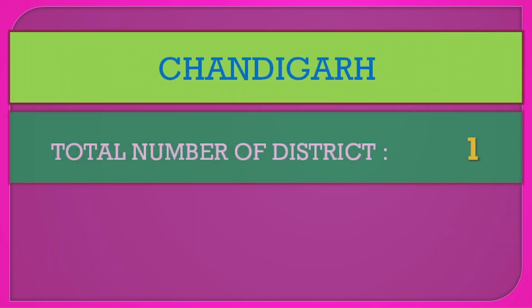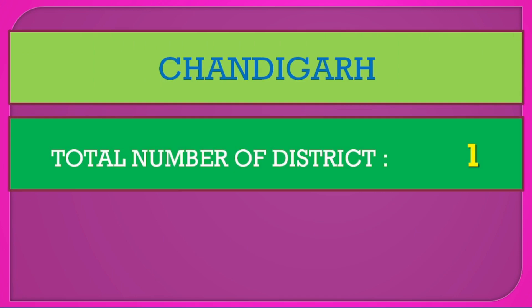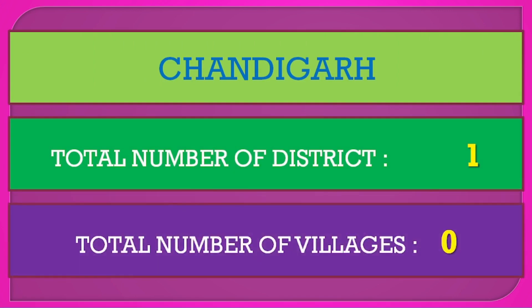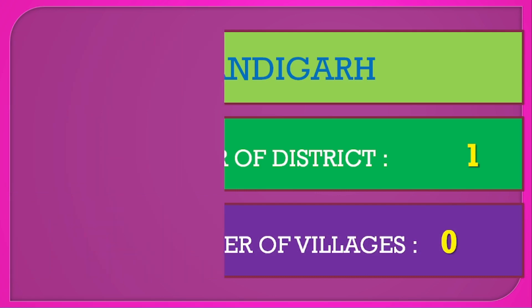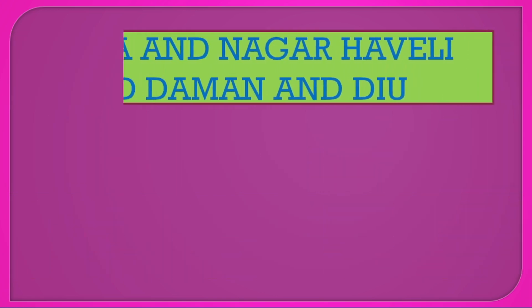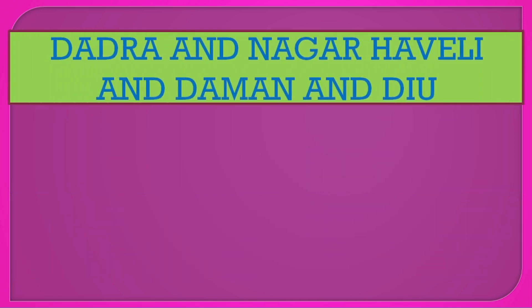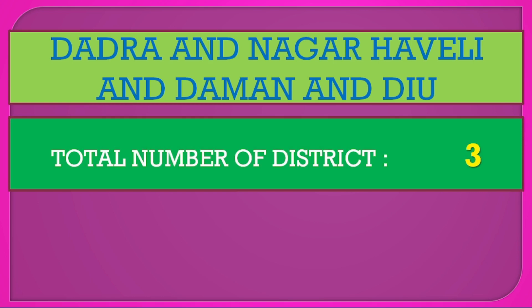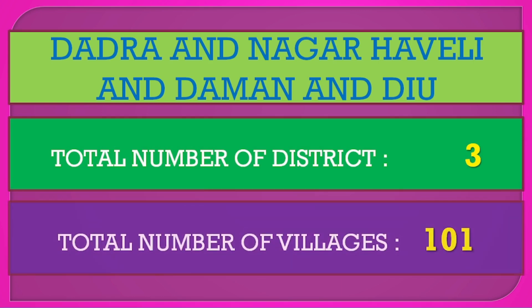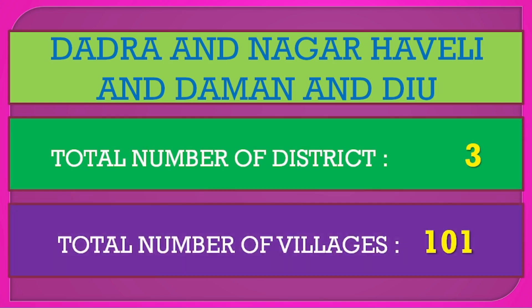Chandigarh: total number of districts 33, total number of villages 300. Dadra and Nagar Haveli: total number of districts 33, total number of villages 101.